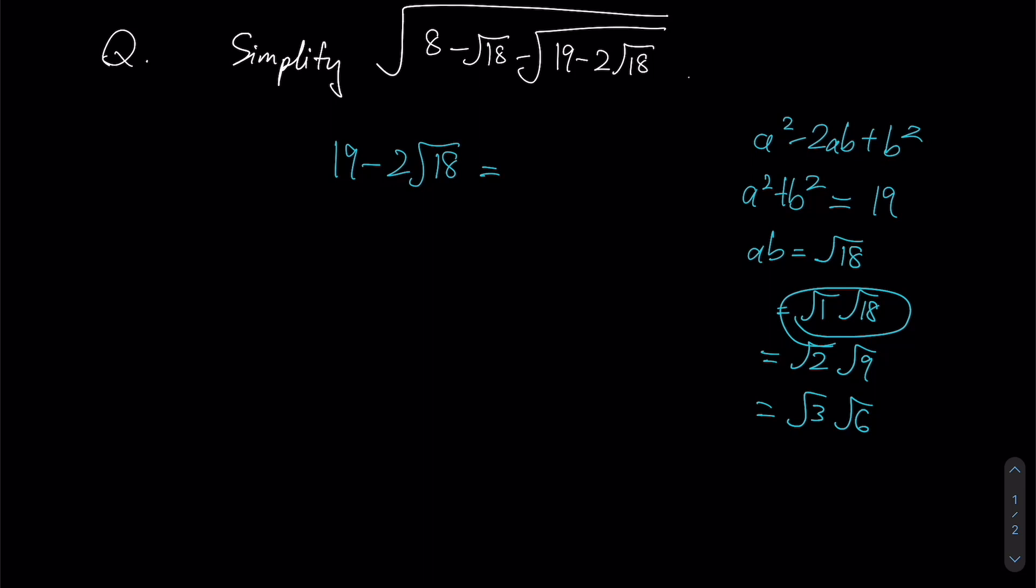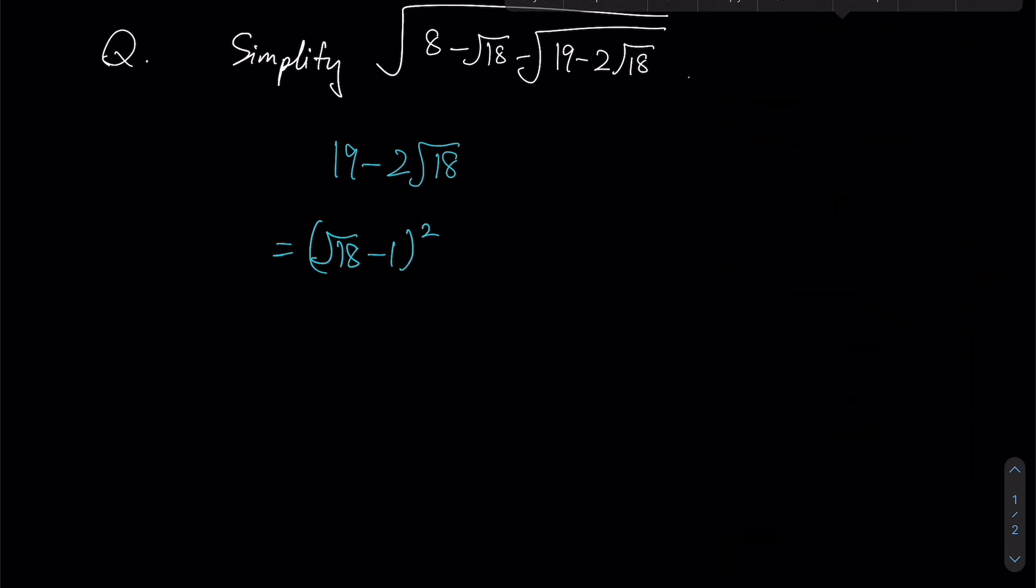So therefore, we will be able to write this as root 18 minus 1, whole thing squared, because the form of a squared minus 2ab plus b squared is essentially equal to a minus b whole thing squared. So therefore we have resolved our first square root. Now let's look at what our expression looks like after this.